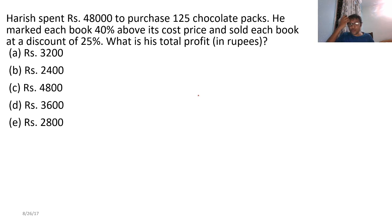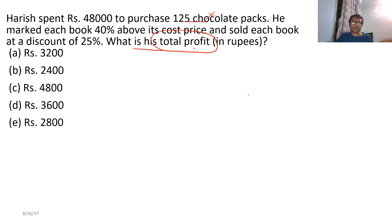Whenever you read a question, focus on what is asked. The question asks for total profit — so per chocolate, I'm not worried about it; ignore it. A lot of things are given in percentage. Whenever things are given in percentage, think: can I start with 100 and cross multiply? In this case, start with 100 as cost price, because profit is calculated on cost price.